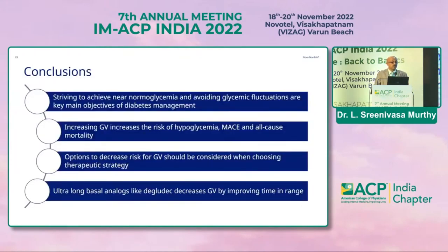To conclude: striving to achieve near-normal glycemia and avoiding glycemic fluctuations are key objectives of diabetes management. Increasing glycemic variability increases the risk of hypoglycemia, MACE, and all-cause events. Options to reduce glycemic variability should be considered when choosing the right drug, and ultra-long basal analog like Degludec definitely reduces glycemic variability by improving time in range. Thank you very much.